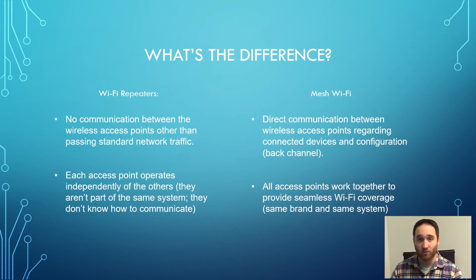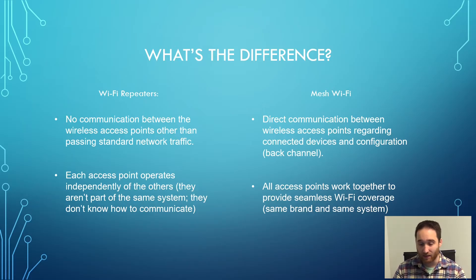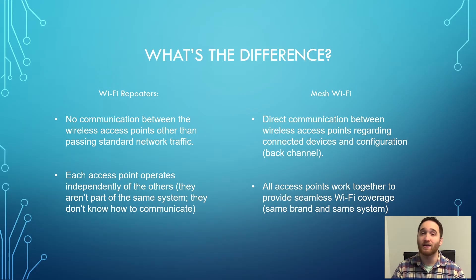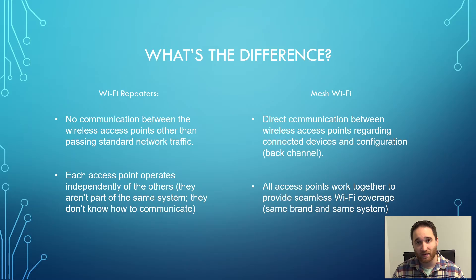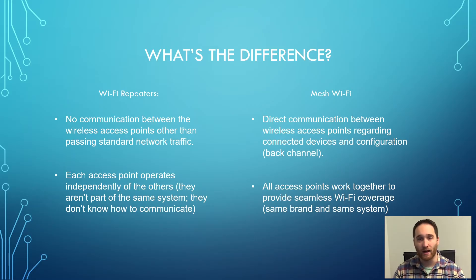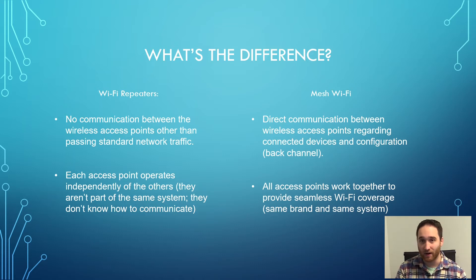With a mesh Wi-Fi system, you have direct communication between wireless access points regarding not only standard network traffic, but also what devices are connected to them and any configurations or settings you set up. All the access points work together to provide seamless Wi-Fi coverage. To do this, they have to be of the same brand or system — you can't mix and match mesh Wi-Fi, because the devices wouldn't know how to communicate. If you do that, you're essentially just setting up expensive Wi-Fi repeaters.